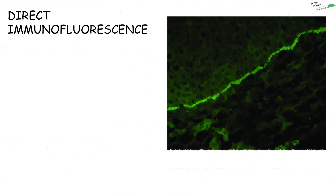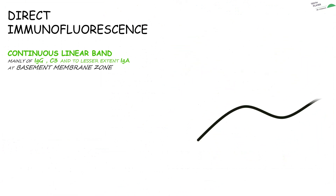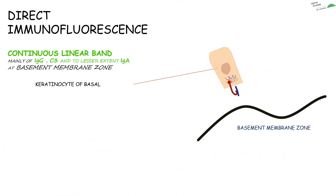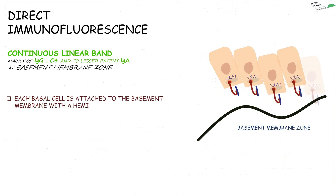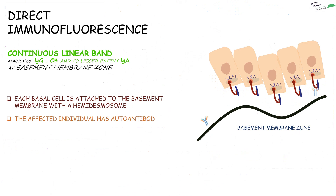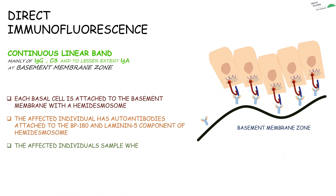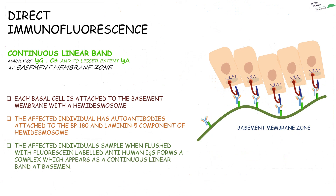Direct immunofluorescence for a patient with mucous membrane pemphigoid shows a continuous linear band, mainly of IgG, C3, and to a lesser extent IgA, at the basement membrane zone. Looking at our model: each basal cell is attached to the basement membrane with a hemidesmosome. The affected individual has auto-antibodies attached to the BP180 and laminin 5 components of hemidesmosomes. When flushed with fluorescein-labeled anti-human IgG, a complex forms which appears as a continuous linear band at the basement membrane zone, viewed as a green line.